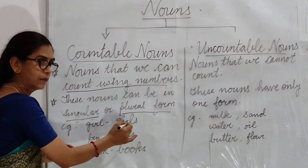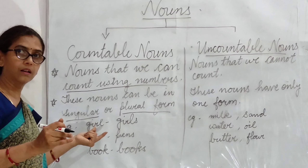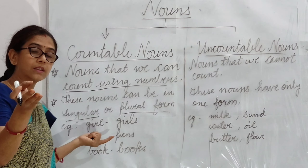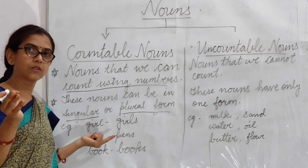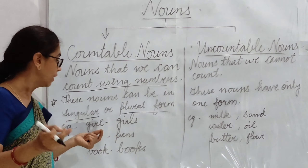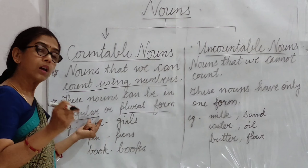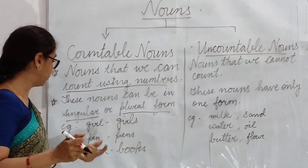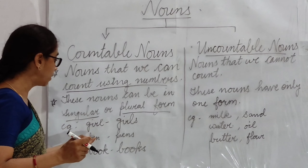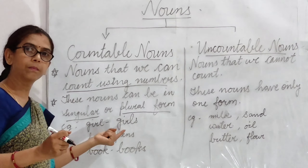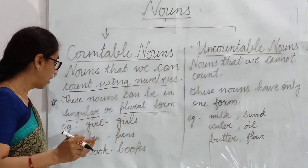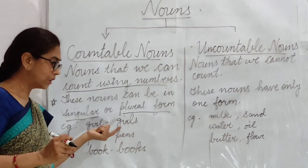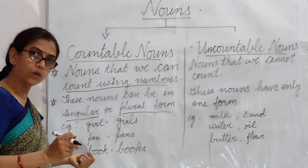Let's see the examples. Girl, girls. Girl ko aap count kar saktay hain — how many girls in your class? You can count them. Iska plural bhi bana saktay hain: girls. In the same way, bag, bags. Book, books. All these nouns can be counted. In sab nouns ko hum count kar saktay hain.